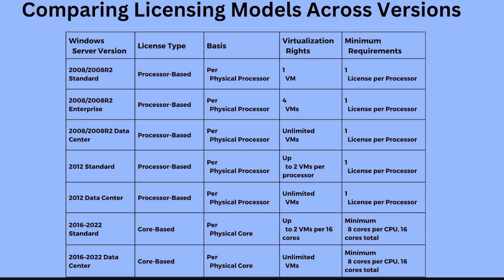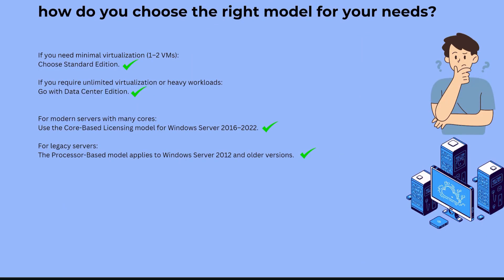Choosing the right licensing model: if you need minimal virtualization — one or two VMs — choose Standard edition. If you require unlimited virtualization or heavy workloads, go with Datacenter edition. For modern servers with many cores, use the core-based licensing model for Windows Server 2016 and 2022. For legacy servers, the processor-based model applies to Windows Server 2012 and earlier versions.